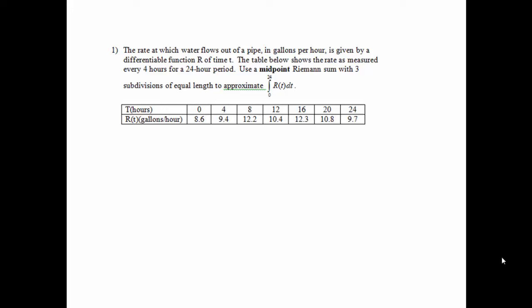Number one. The rate at which water flows out of a pipe in gallons per hour is given by a differentiable function r of time t. The table below shows the rate as measured every four hours for a 24-hour period. Use a midpoint Riemann sum with three subdivisions of equal length to approximate the integral of 0 to 24 r of t.